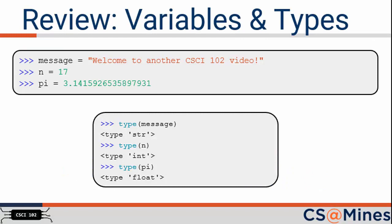Let's start with a quick review of variables and types. Notice this slide defines three variables: message, n, and pi. Then, for each of these variables, notice the type of the variable that is getting stored, which can be found through the type function call.